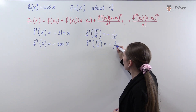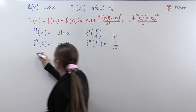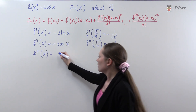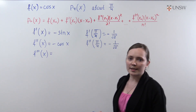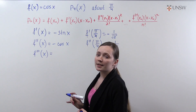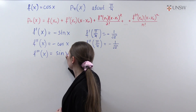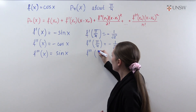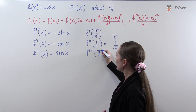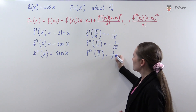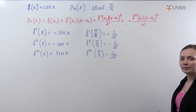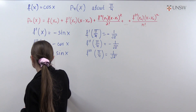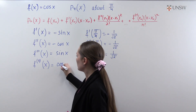The third derivative is sine x, and its value at pi over 4 is 1 over square root of 2. The fourth derivative is cos x.